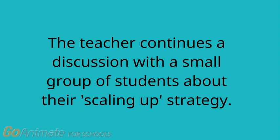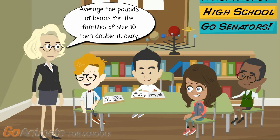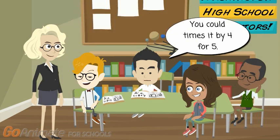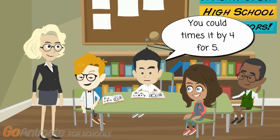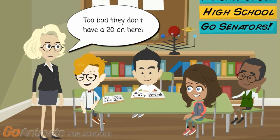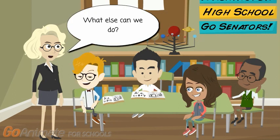The teacher continues a discussion with a small group of students about their scaling up strategy. Average the pounds of beans for the families of size 10, then double it. Orion, what about you? What do you think? You could times it by four for five, and we have two entries of five-person families. Too bad they don't have a 20 on here — wouldn't that make it a lot easier? What else can we do?